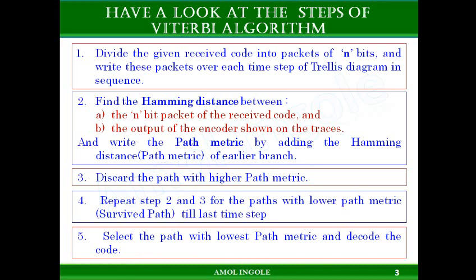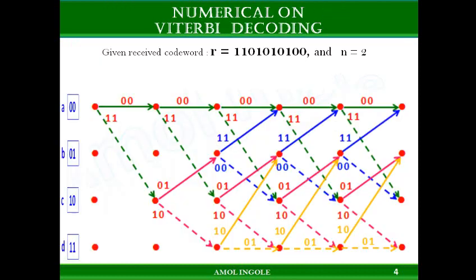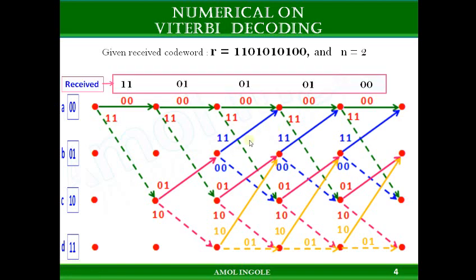We are going to follow these five steps in Viterbi decoding. This is the received codeword given in the numerical. Step 1 is dividing the received sequence into packets of n bits and writing those packets over the trellis. This is the same received code written in the form of two-bit packets — first two bits, next two bits, and so on.